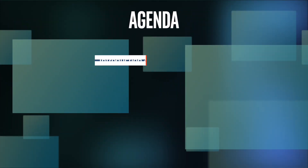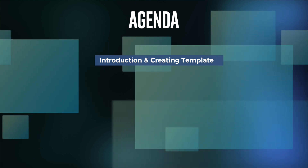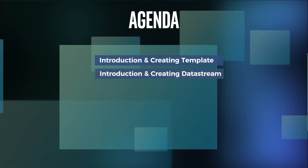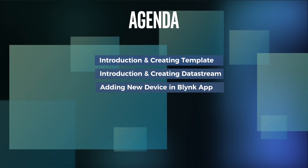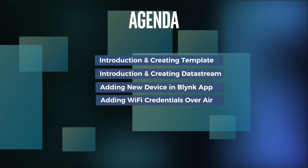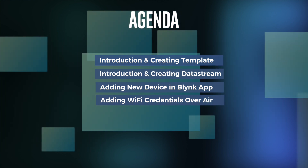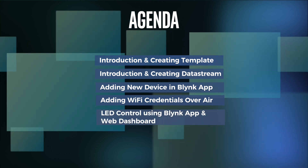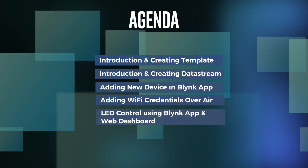In this video, I will let you know how to get started with your very first project using the new and advanced Blynk IoT platform. While watching this video, you will be learning about what is a template and how to create our own template inside the Blynk app, what is a data stream and how to create a data stream, how to add new devices inside the Blynk IoT platform, and how to add Wi-Fi credentials over the air onto our ESP based boards. In the end, we will be making a very simple project of controlling an LED using both the mobile dashboard as well as the web dashboard. So this is a basic video just to get started with the new and advanced Blynk IoT platform.